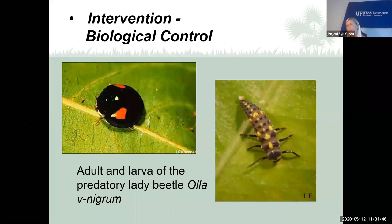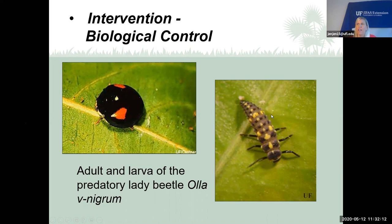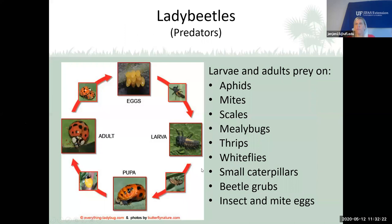The lady beetle or ladybug comes in all different colors and shapes. The immature ladybug looks quite different from the adult — almost like a little alligator with six legs — but it eats just as many aphids, whiteflies, and mealybugs as the adult. Ladybugs eat aphids, mites, spider mites, scales, mealybugs, thrips, whiteflies, caterpillars, grubs — just about anything. You want to encourage ladybugs to come to your yard.